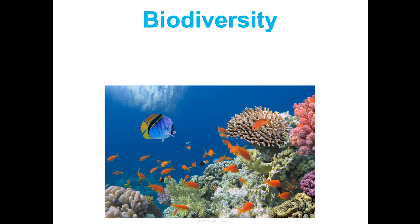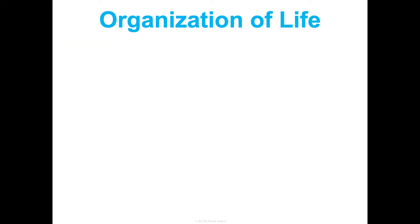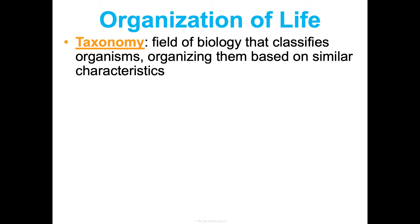A key term to mention is biodiversity — the variety of organisms considered at all levels. We look at variety within populations, like within groups of the same species there's a ton of variation, but also at an ecosystem level with all the different living things present. Over time, biodiversity has increased and we have millions of identified species, but there are also still millions we believe we haven't even identified yet, which is remarkable.